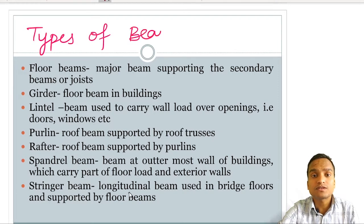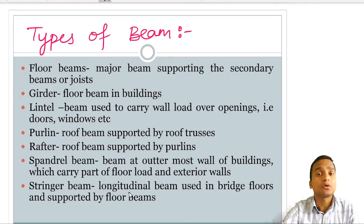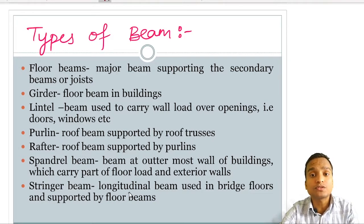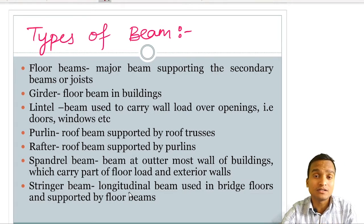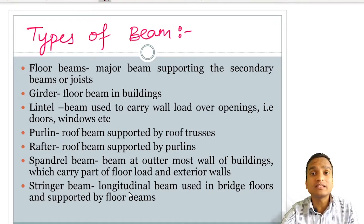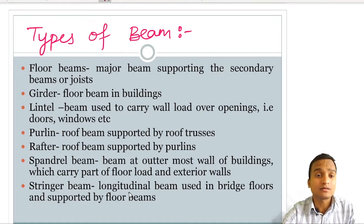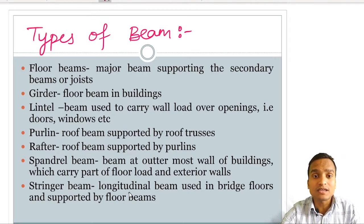The first type is floor beams, also called primary beams or major beams, which support the secondary beams or joists. In detailed beam design we also cover gantry girders and plate girders, which are complex built-up beam sections generally used as floor beams in industrial buildings.